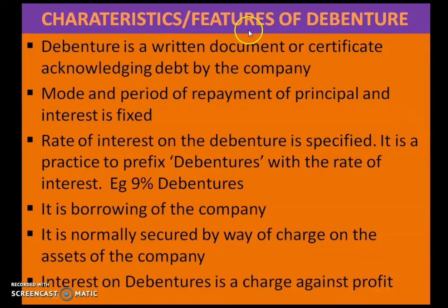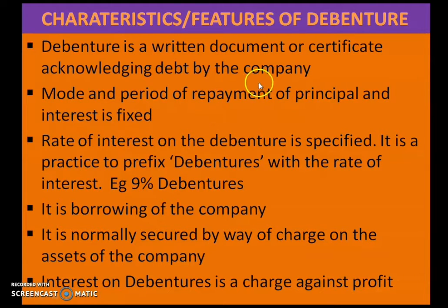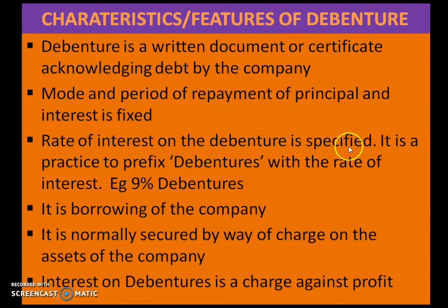Now, the characteristics and features of a debenture. First, a debenture is a written document or certificate acknowledging debt by a company — the company has taken a debt and they are issuing a certificate acknowledging that debt through a document. Second, the mode and method of repayment of principal and interest is fixed in advance.